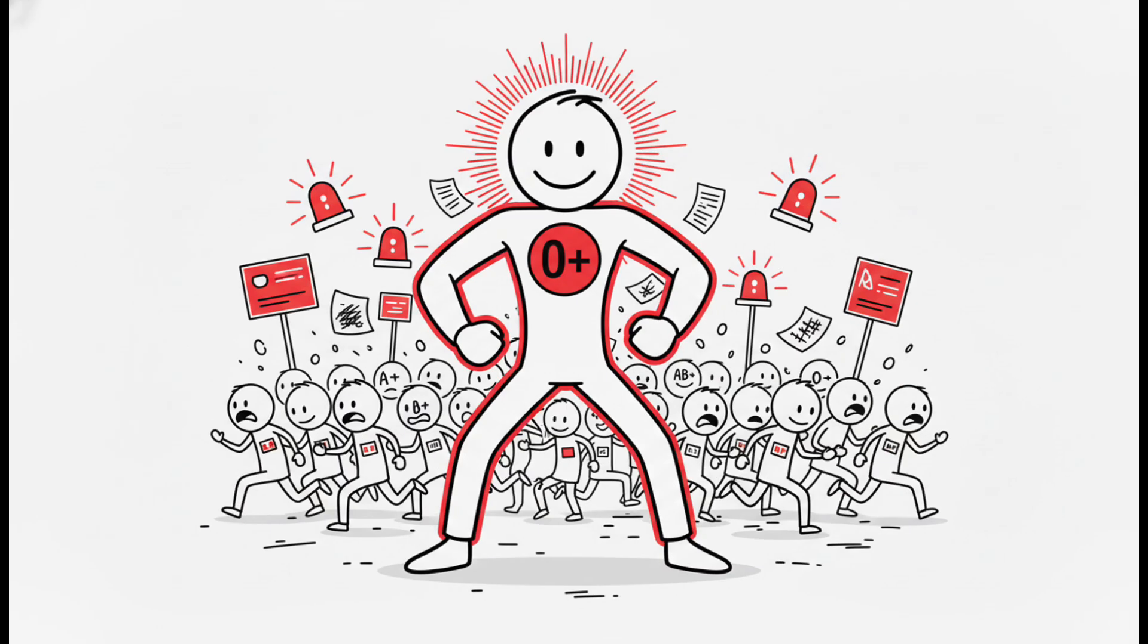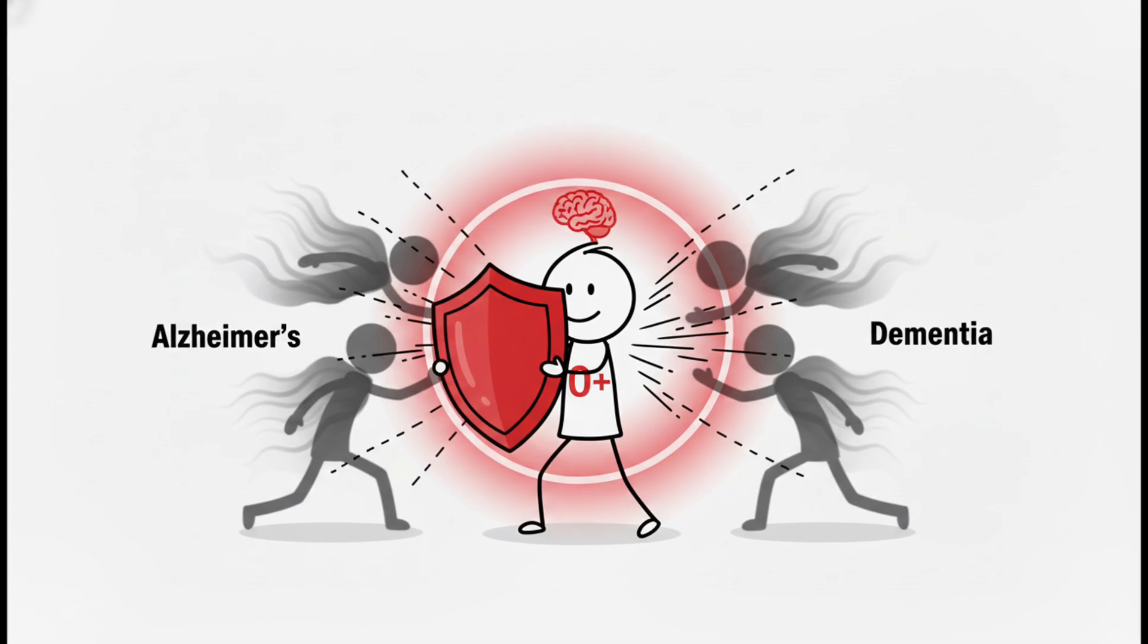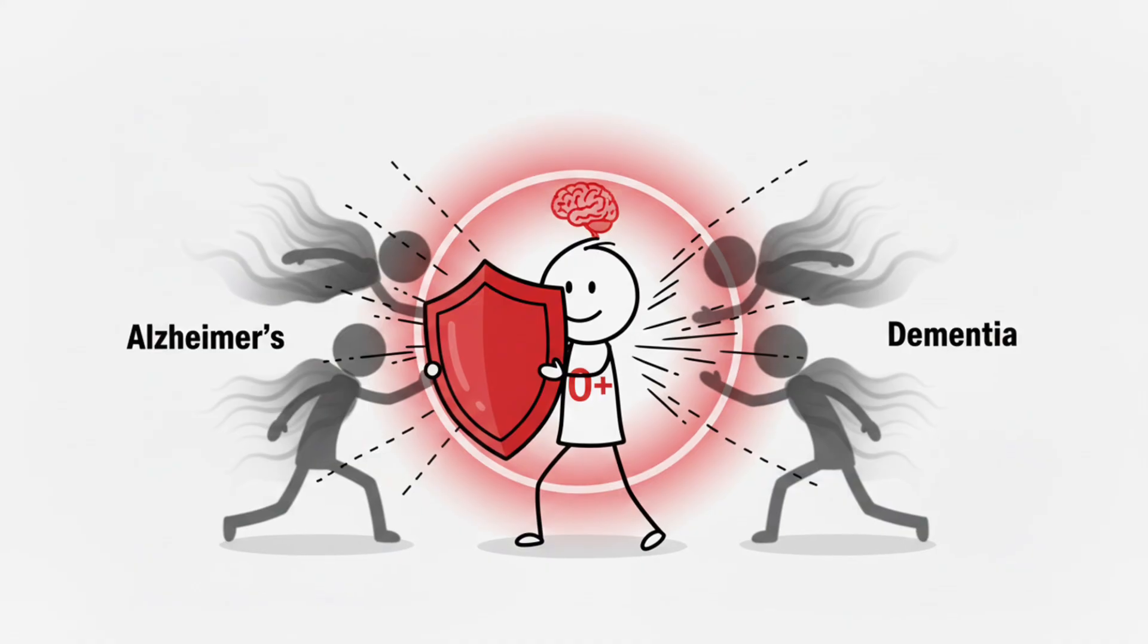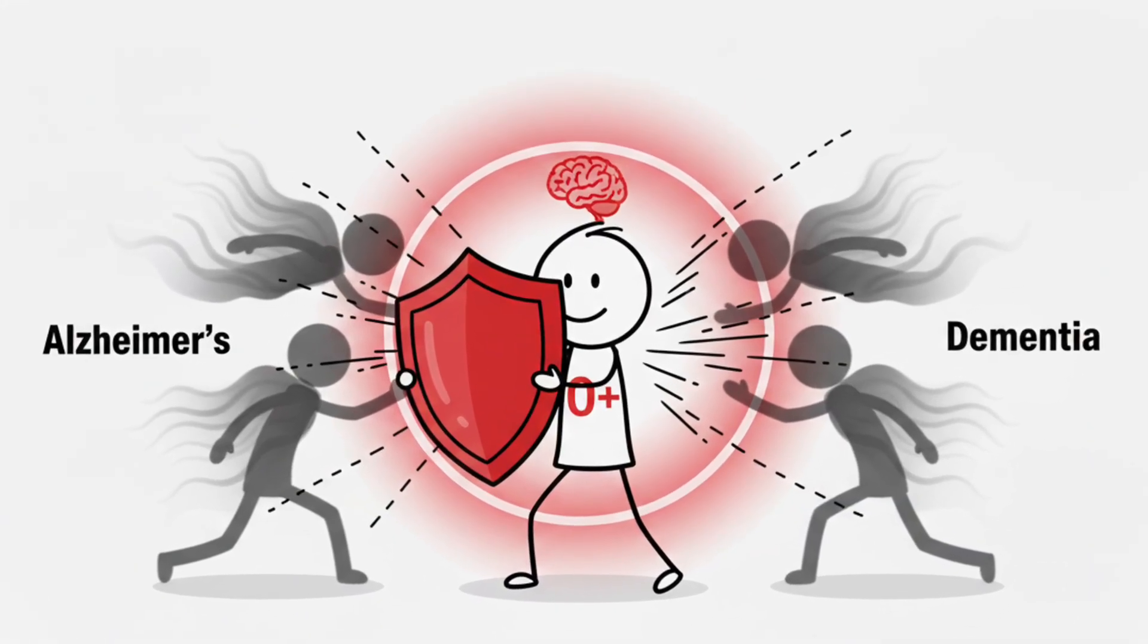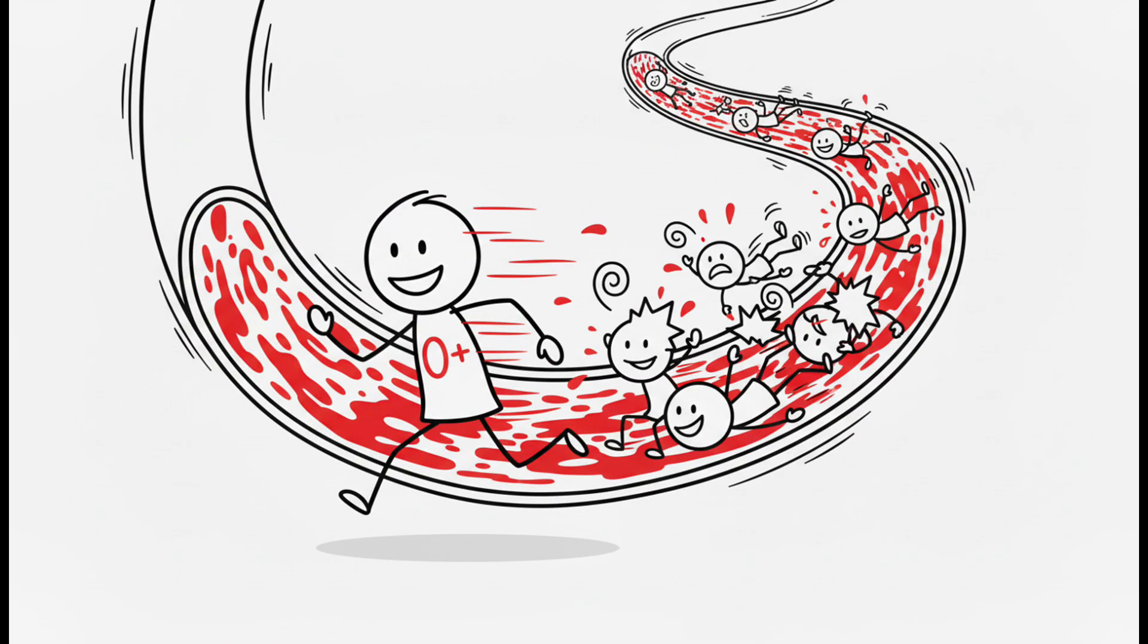In emergencies, it's the majority leader. But this survivor's blood comes with evolutionary trade-offs. The good? Type O carriers have significantly lower risk of Alzheimer's and dementia as they age. Your blood may literally be protecting your mind.